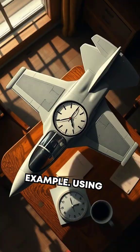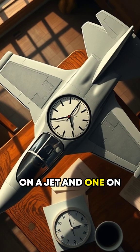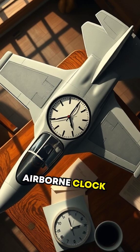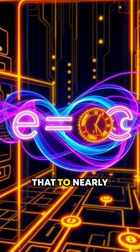Here's a wild example. Using precise clocks, scientists have placed one clock on a jet and one on the ground. Guess what? The airborne clock ticks just a tiny bit slower. Now imagine scaling that to nearly light speed.